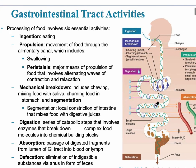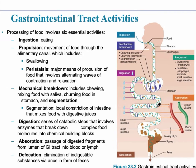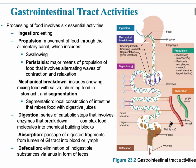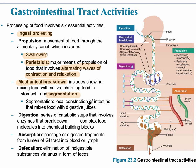The activities that occur in the digestive tract begin with ingestion — the process of eating, putting food into our mouth. Next is propulsion, which includes swallowing and then peristalsis. Peristalsis means alternating waves of contraction and relaxation of a muscular tube. There is then mechanical breakdown, which includes chewing, mixing the food with saliva, and a process called segmentation.